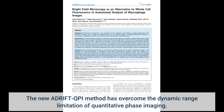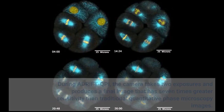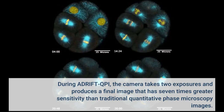The new Adrift QPI method has overcome the dynamic range limitation of quantitative phase imaging. During Adrift QPI, the camera takes two exposures and produces a final image that has seven times greater sensitivity than traditional quantitative phase microscopy images.